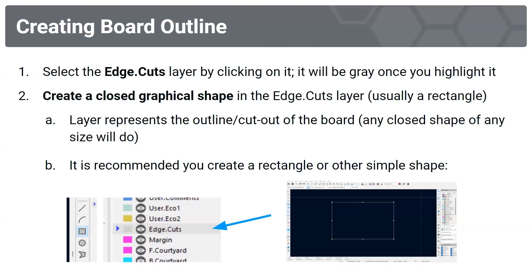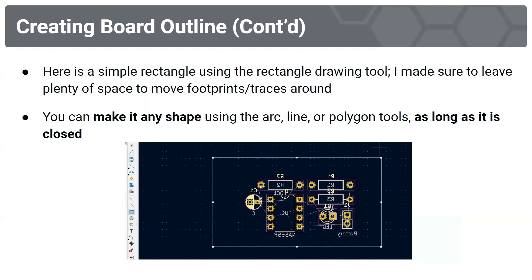To create the board outline, select the Edge Cuts layer by clicking on it — it will be highlighted gray. Then create a closed graphical shape in the Edge Cuts layer, usually a rectangle. This layer represents the outline or cutout of the board. Make sure to leave plenty of space to move footprints and traces around. You can use the arc, line, or polygon tools as long as the shape is closed.